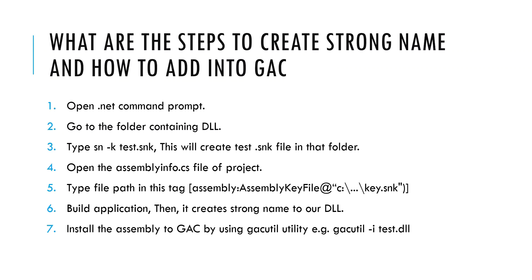What are the main steps to create a strong name and add the shared assembly into the GAC? First, open the .NET command prompt and type 'sn -k' followed by the strong name file name to create the key file. After creating the strong name, update the assembly information in the AssemblyInfo.cs file. Then build the project. Using the GacUtil tool, you can add this assembly into the GAC folder.